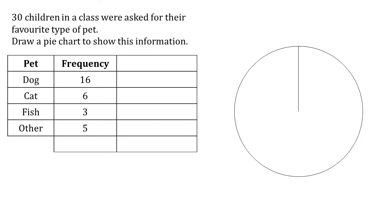In this example, we're given that 30 children in a class were asked for their favourite type of pet. 16 of them said dogs, 6 said cats, 3 said fish, and the remaining 5 said other animals, which we've grouped together as other. We need to draw a pie chart to show this information.